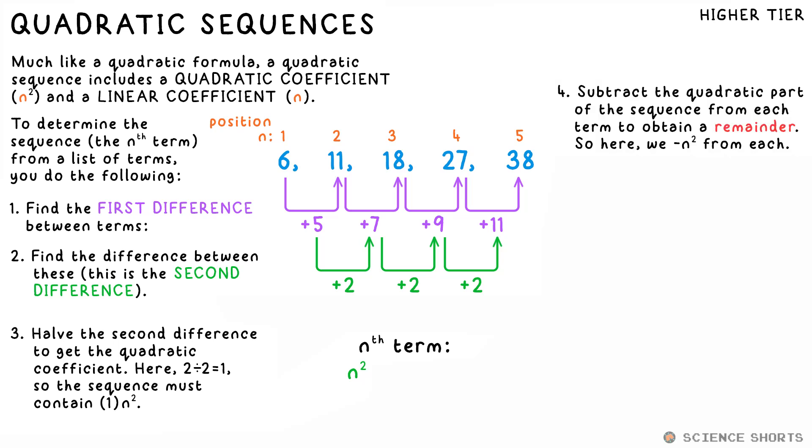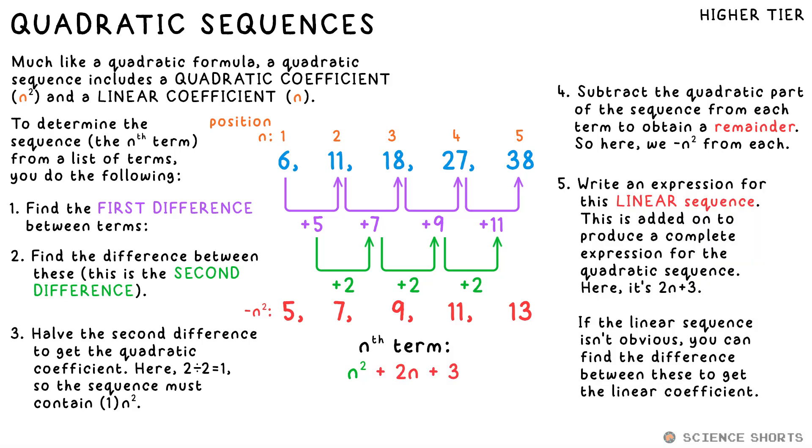Half of this gives us the coefficient of n squared in the sequence. We then punch in the positions in the place of the n's and subtract this from the sequence. This gives us the remainder for each term. This new interim sequence we have will be a linear sequence, which we add to the quadratic part.